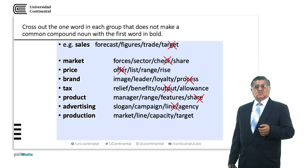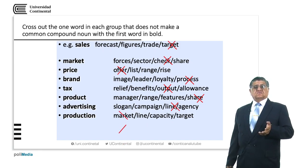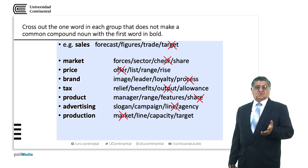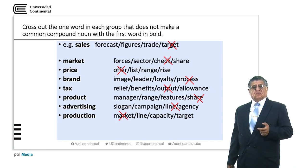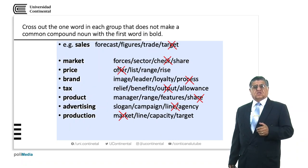Production: 'production line', 'production capacity', 'production target' are all correct. 'Production market' is not correct.